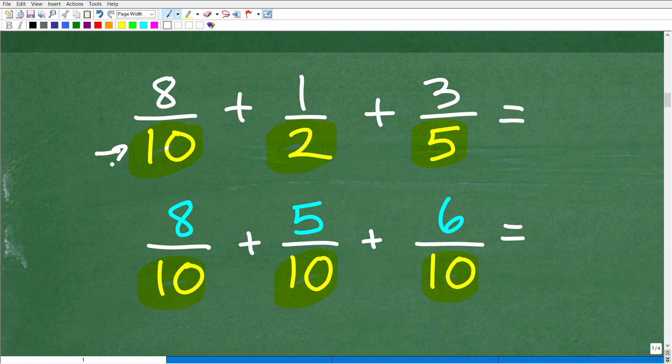All right, so 8 tenths, well, this fraction already has 10 as its denominator, so I don't have to do anything to it. But here I have 1 half, so how can I take this 2 and write it as a 10? I've got to take this 2 and make it into a 10. Easy, just multiply it by 5, right? So 2 times 5 gives me a 10. But if I multiply this denominator by 5, I've got to multiply the numerator by 5. So this is going to be 5 over 10. So 5 tenths, yes, it is equal to 1 half if I told you to reduce that. So you're not breaking the fraction, you're just rewriting it with a different denominator. All right, so how do we take this 5 and turn it into a 10? Easy, just multiply it by 2. So I've got to multiply the numerator by 2, so I've got 6 tenths.